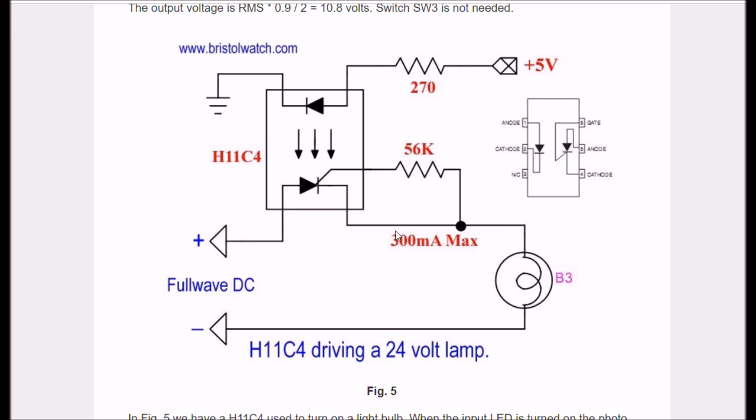And I'm inputting full wave DC. Now, these things have a voltage rating, depending on which one you get, 250 or 400 volts. Over here to your right is the actual outline, if you can see it, of the optocoupler from the spec sheet.